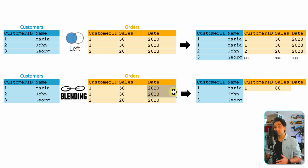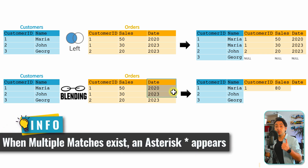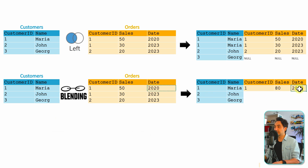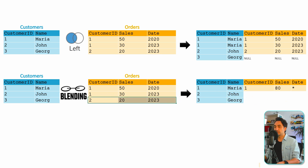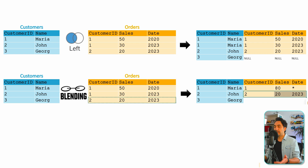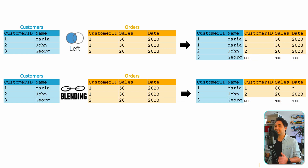The date field is a dimension, so it cannot be aggregated. Since there are two different date values for customer one, Tableau cannot decide which to show and writes a star (*) instead. This is how data blending works — Tableau always tries to aggregate data before combining it. For John (customer two) there is only one order record, so nothing gets aggregated and the output is exactly the same. For George, there is no matching data, so the output is null.